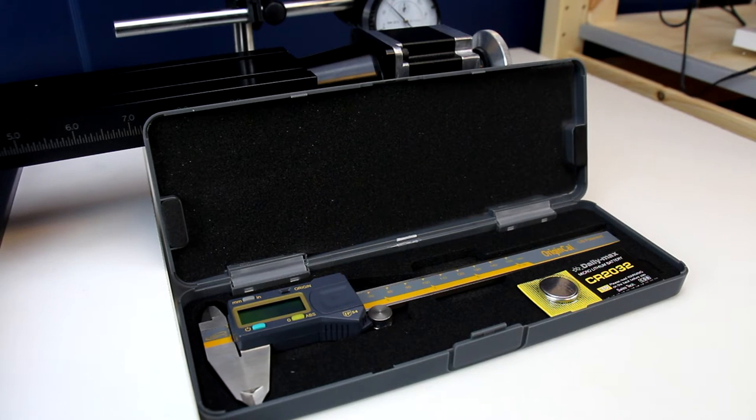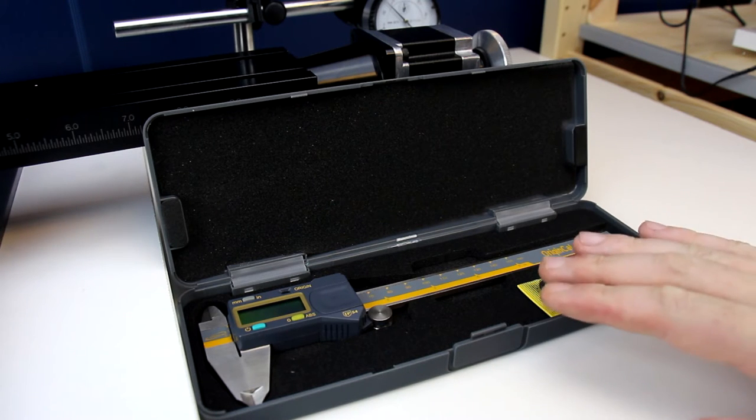Here we're going to take a quick look at an iGaging Origin Cal digital caliper. This is a really important item to have in your machine shop for accurate measurements, whether you use a digital caliper or a dial caliper. You just need some good quality caliper in your shop.